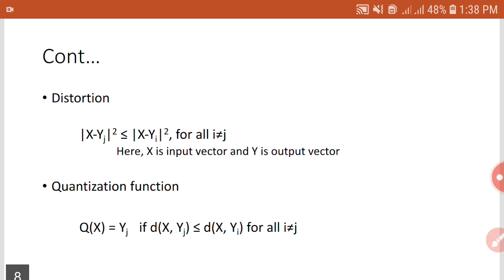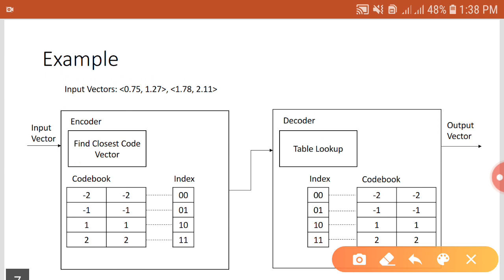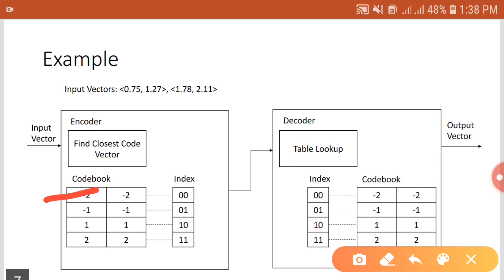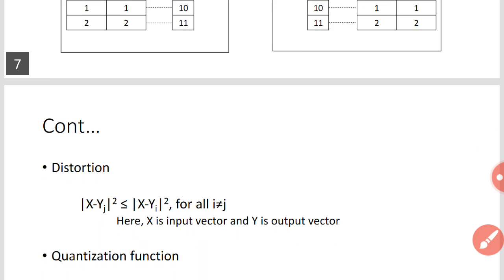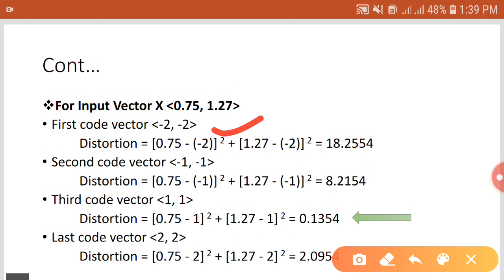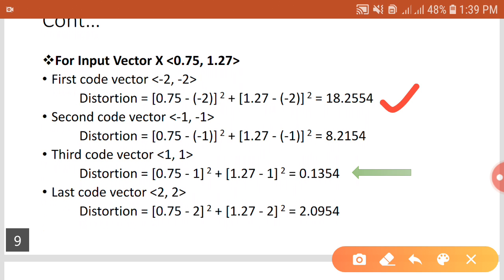For example, consider the first input vector x = (0.75, 1.27). The first step is to find the closest code vector from the codebook using the Euclidean distance distortion measure. The distortion between input x and the first code vector (-2, -2) is 18.2554.